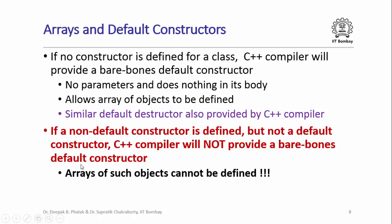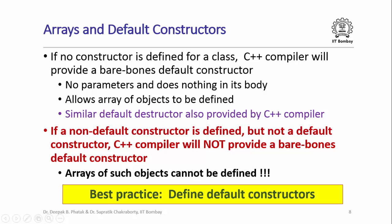The tricky situation is when you have defined a non-default constructor but not a default constructor. In this case, the C++ compiler will not assume you forgot to define a constructor — since you did define a non-default one — and therefore it will not provide a bare-bones default constructor. Without a default constructor, you cannot allocate objects in an array of this class. So, the best practice is: whenever you define a class, always define a default constructor for it as well.